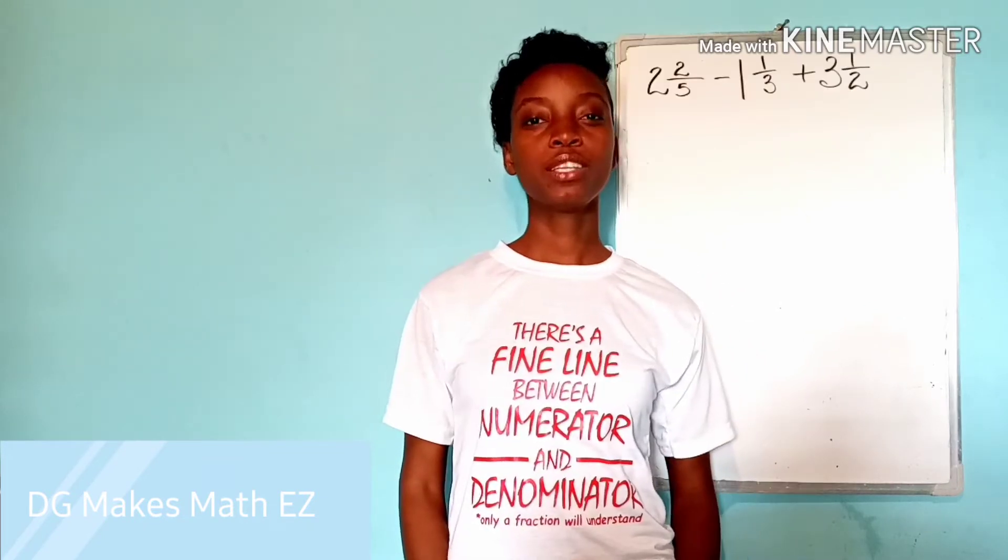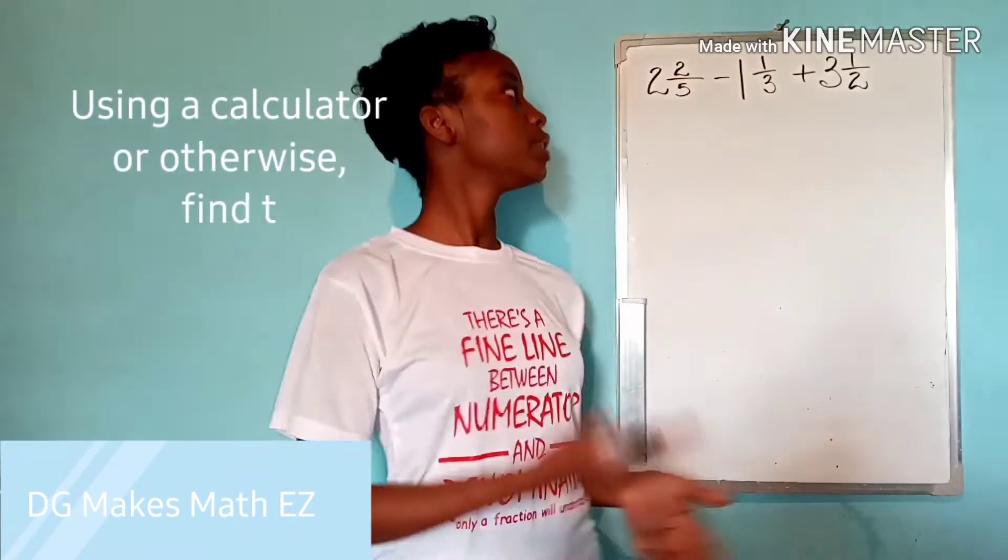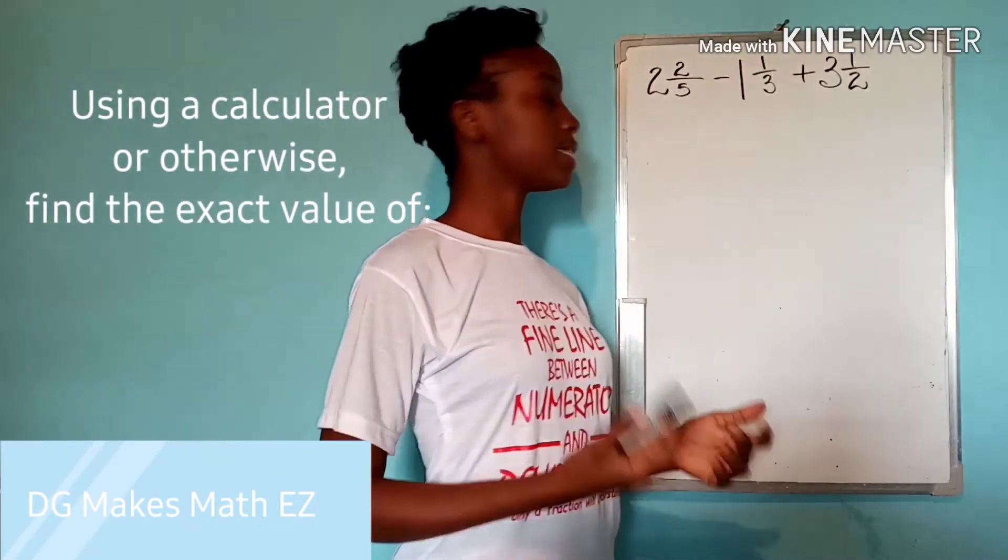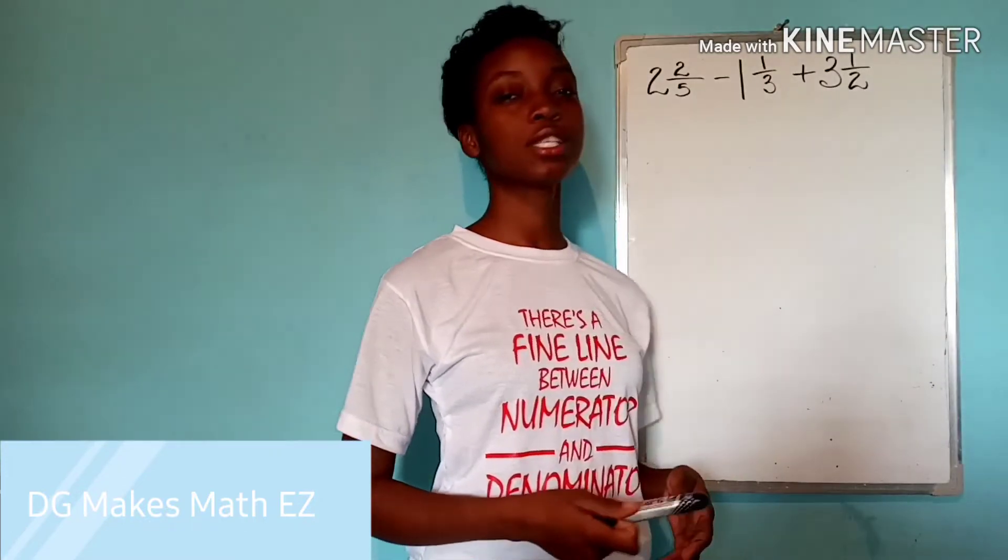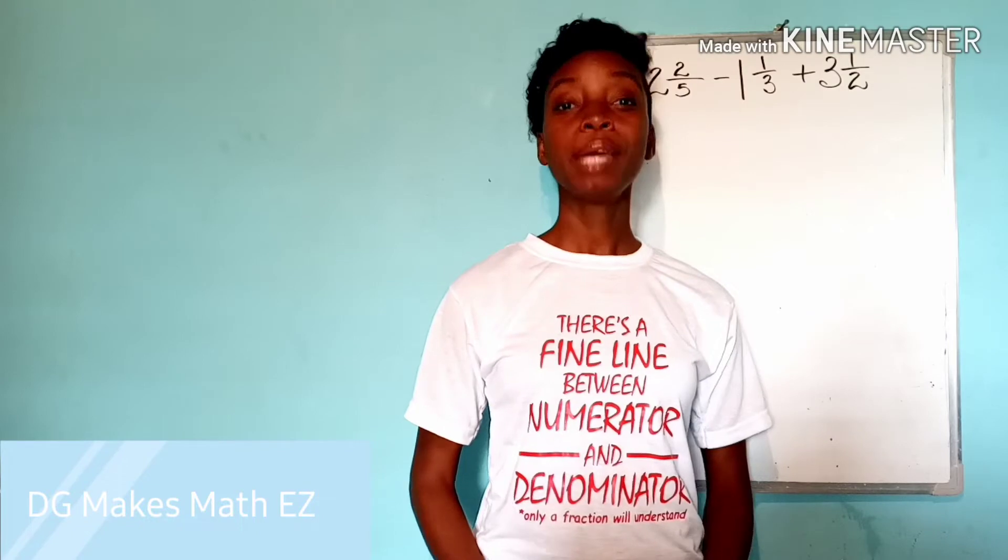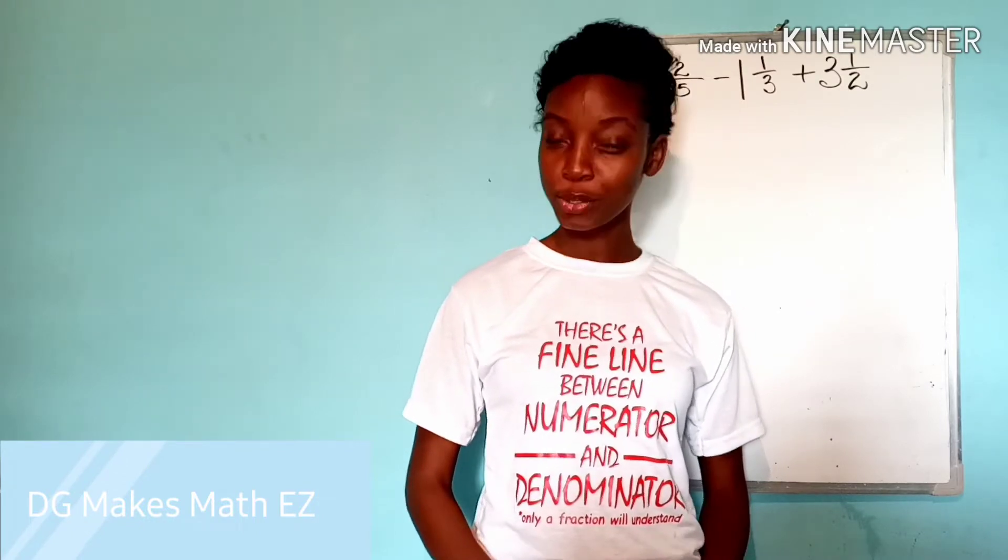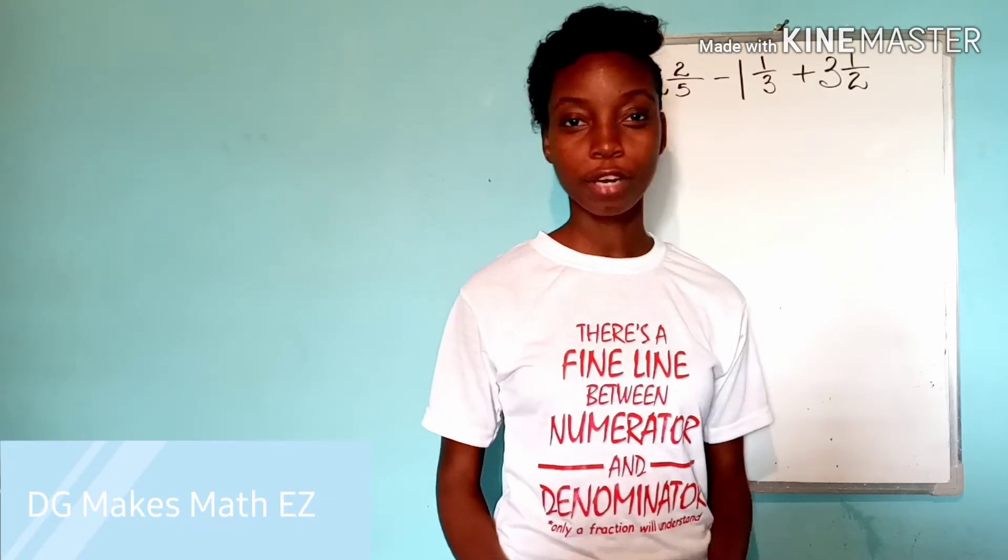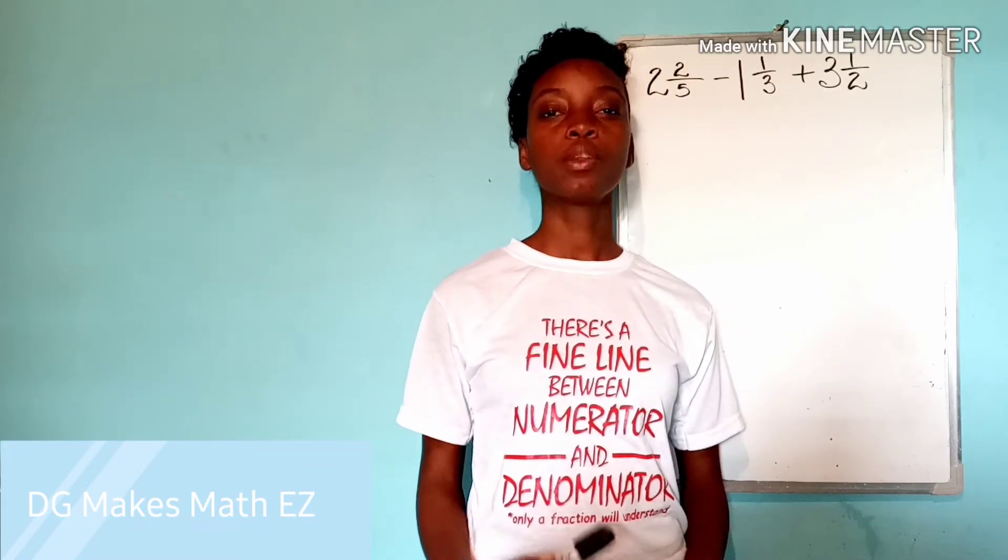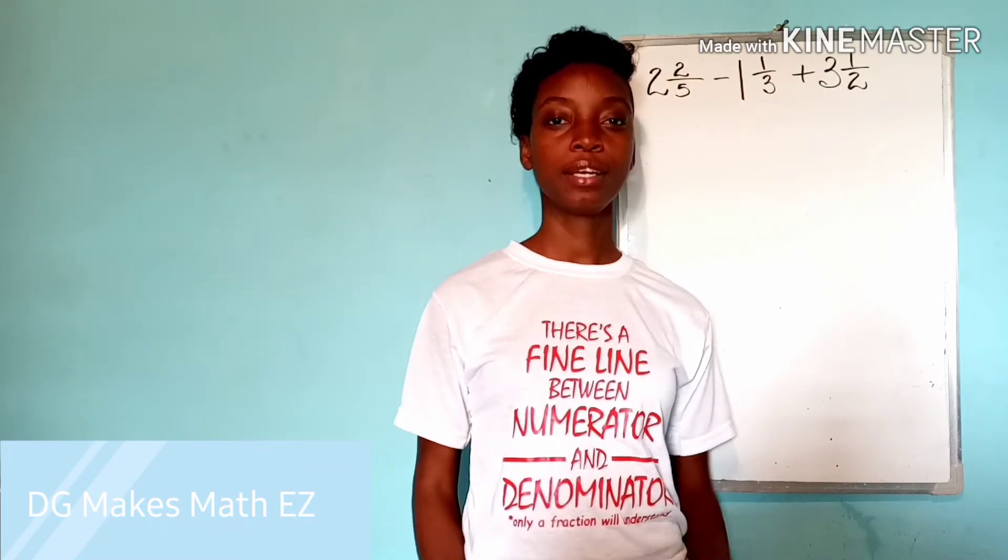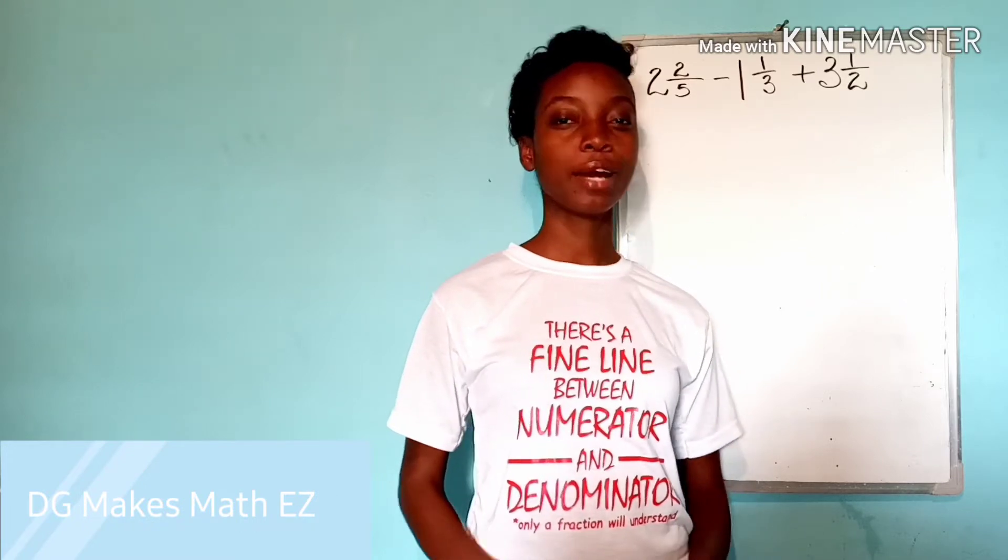Now usually the question reads something like this: using a calculator or otherwise find the exact value of two and two fifths minus one and one third plus three and a half. Maybe many of you like my students are very much afraid of fractions. I'm not sure why but today I'm going to show you one of the most effective ways how you can go about doing these questions.